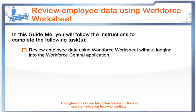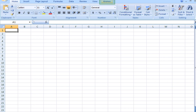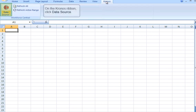You want to view all employees that have unexcused absences for the previous pay period without logging in to Workforce Central. Use the Workforce worksheet feature in Excel 2007 to perform this task. From a blank worksheet in Microsoft Excel 2007, click the Kronos tab. On the Kronos ribbon, click Data Source.